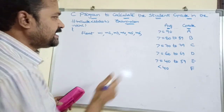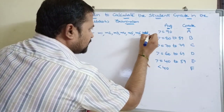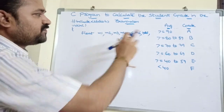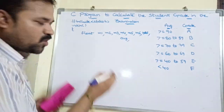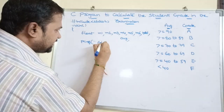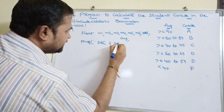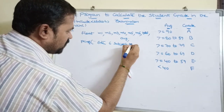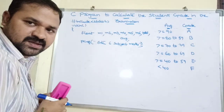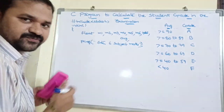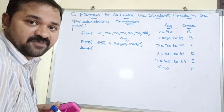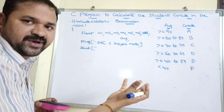We also declare variables for total and average. These are all our variables. To read the input, we use printf to display the message 'Enter six subject marks', then scanf. Since marks are of type float, the format specifier is %f. We need six %f specifiers for the six subject marks.